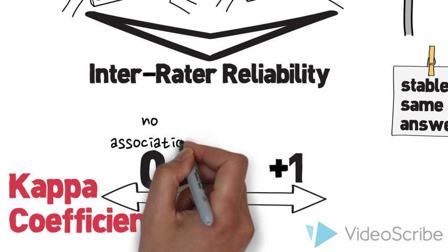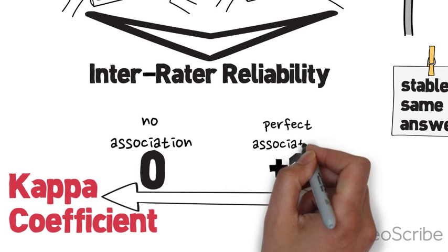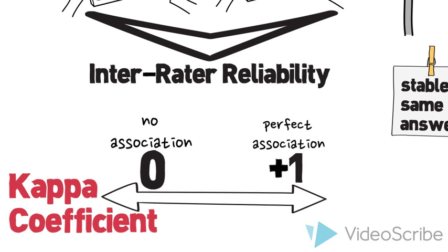Like correlation coefficients, kappa coefficients range from a value of 0, representing no association, to the value of 1, representing perfect association.